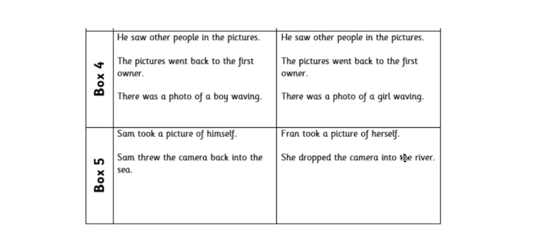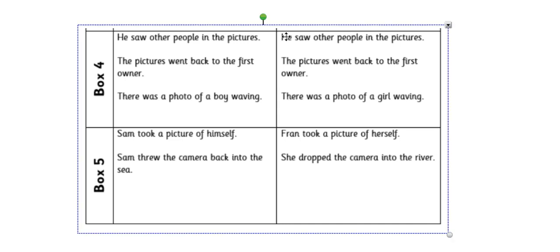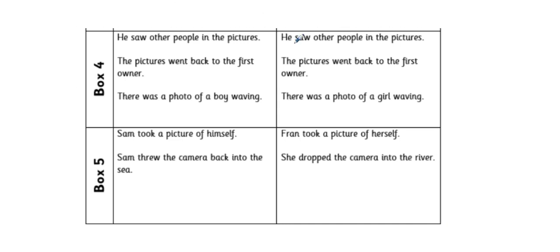We're moving on to box four and five. If you haven't finished box three, pause the video and come back as soon as you're ready. I didn't change anything here. In Flotsam, he saw other people in the pictures. In my story — she, let's edit that now — she saw other people in the pictures, because Fran is most definitely a girl. The pictures went back to the first owner. And in Flotsam, there was a photo of a boy waving — remember, he was smiling kindly. But in mine, I've just changed one part: it's a girl waving this time. I could describe what she looks like.